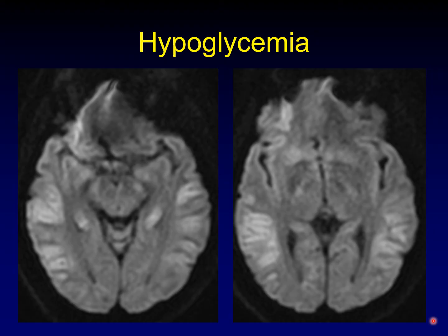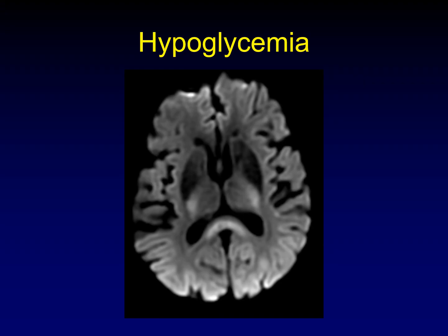Hypoglycemia is another element of the differential. You can see patchy areas of gyroform restricted diffusion, and the clinical history is key to this diagnosis. Another example of hypoglycemia shows related areas of potential abnormality, including the lateral thalamic nuclei and the splenium of the corpus callosum having abnormal signal — this is a reversible cytotoxic lesion of the corpus callosum — along with the gyroform signal we've been discussing.